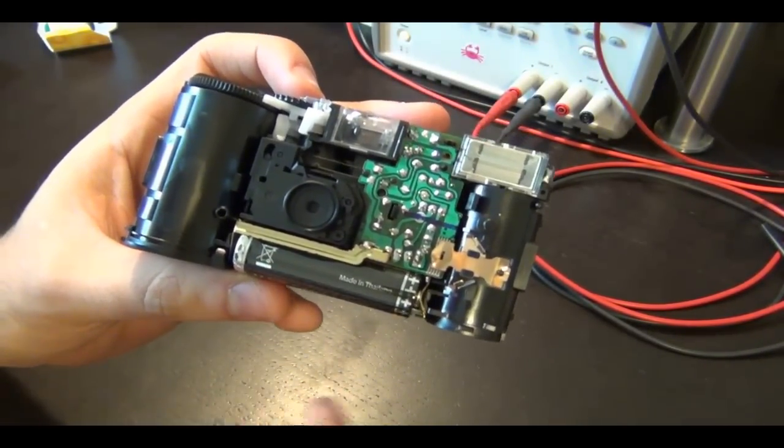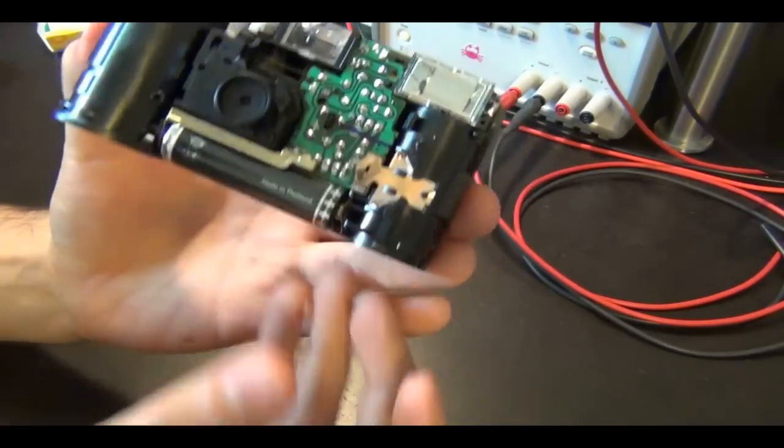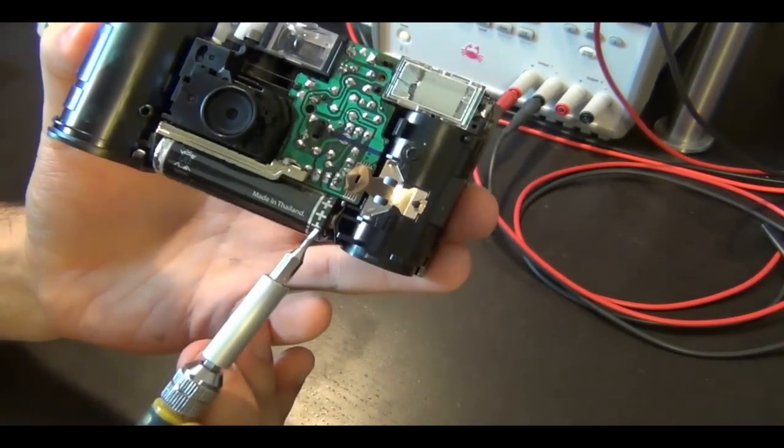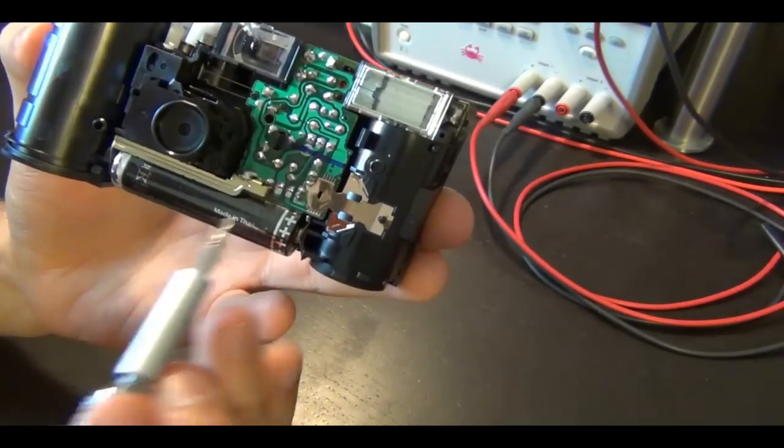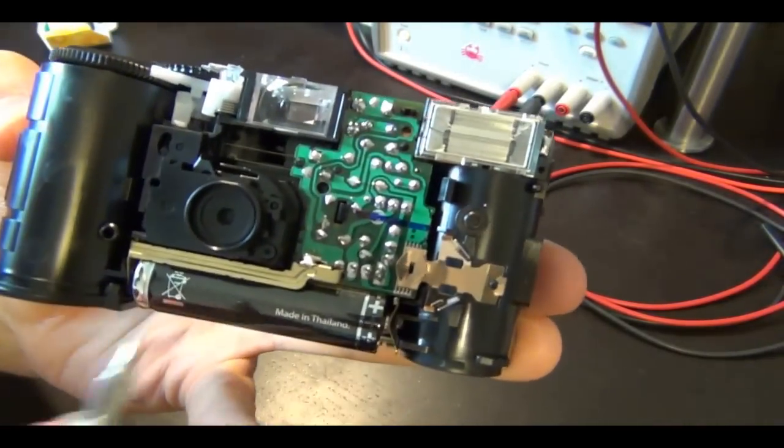So don't throw these away or if you do, make sure you recycle them. So here's the AA battery that powers the flash. Here's the flash circuit itself. This entire PCB is only responsible for operating the flash circuit.